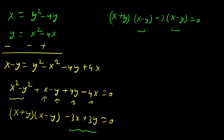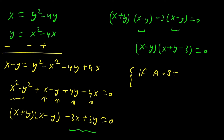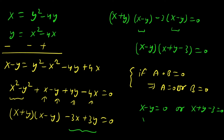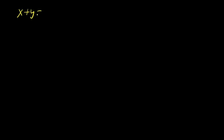Since (x minus y) is a common factor, taking it out gives (x minus y)(x plus y minus 3) equals 0. Applying the zero-product rule: either x minus y equals 0, giving x equals y, or x plus y minus 3 equals 0, giving x plus y equals 3. Since it is given that x is not equal to y, the first case is rejected. Therefore x plus y equals 3.